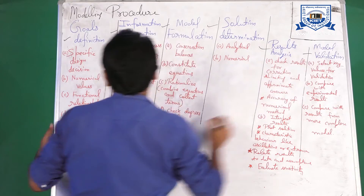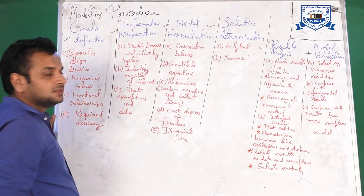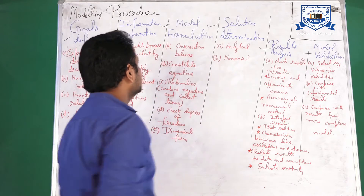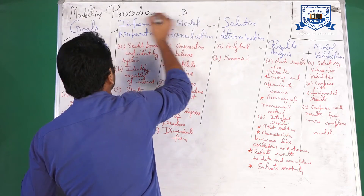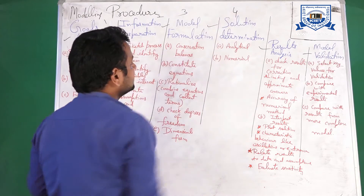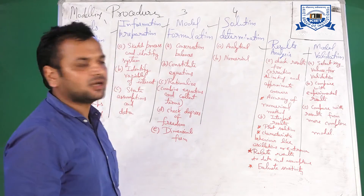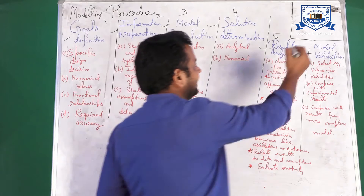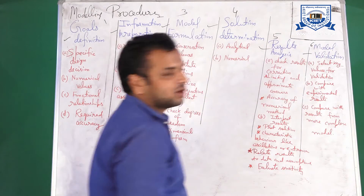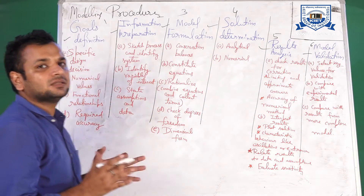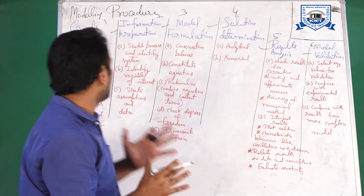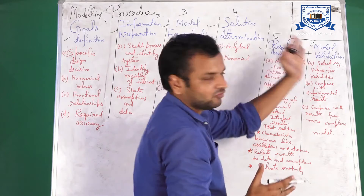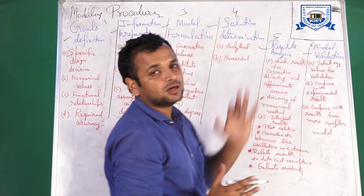The six steps are: first, goals definition; second, information preparation; third, model formulation; fourth, solution determination; fifth, result analysis; and sixth, model validation. The whole modeling procedure goes from defining your goals to validating your model.